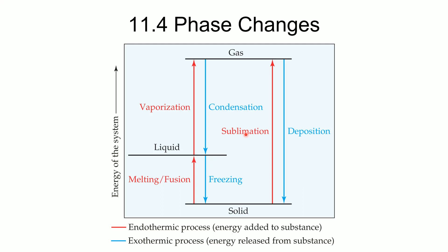Sublimation is what happens with carbon dioxide. When we have dry ice, it gets converted directly into the gas phase. And then if we take a gas and convert that into a solid, we call that deposition. I want you to know each of these terms and be familiar with them, because we're going to use these terms to do some math.